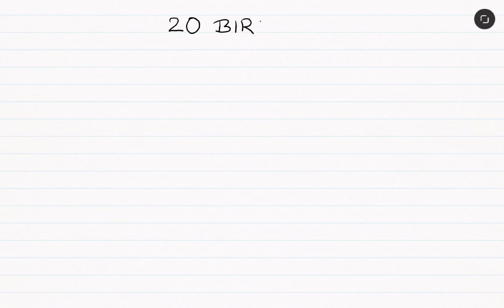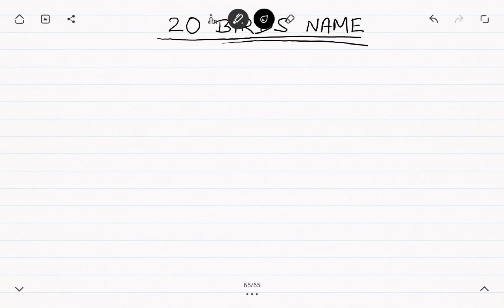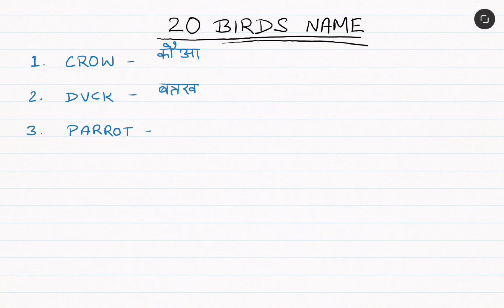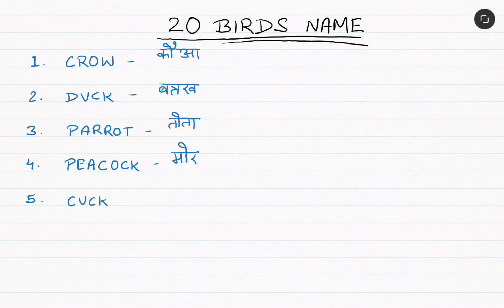Hello students, today in this video we will get to know about the names of 20 birds. The first one is crow, that is kawwa. Second, duck means battak. Third, parrot means tota. Fourth, peacock means more. Fifth, cuckoo, that is koil.